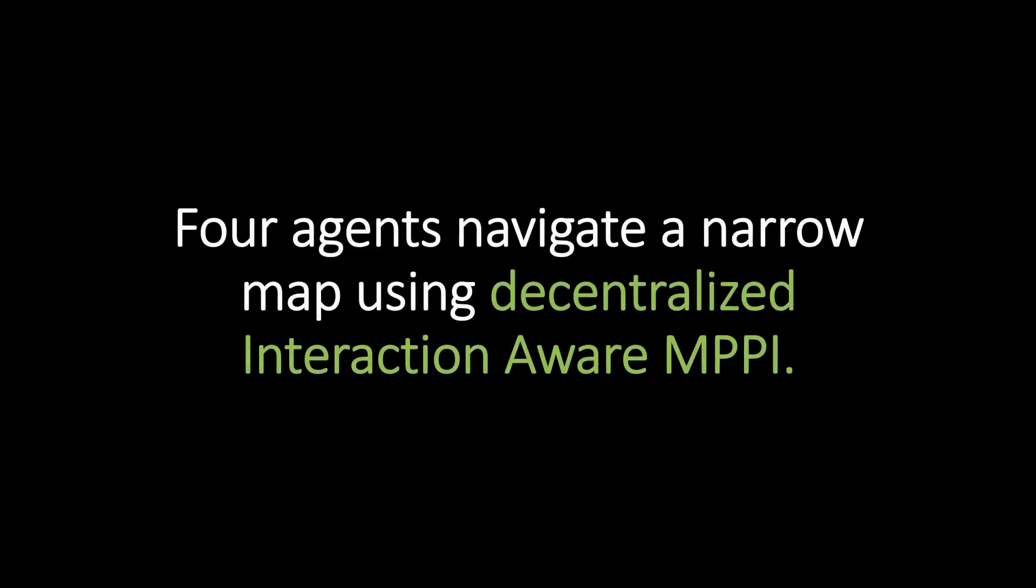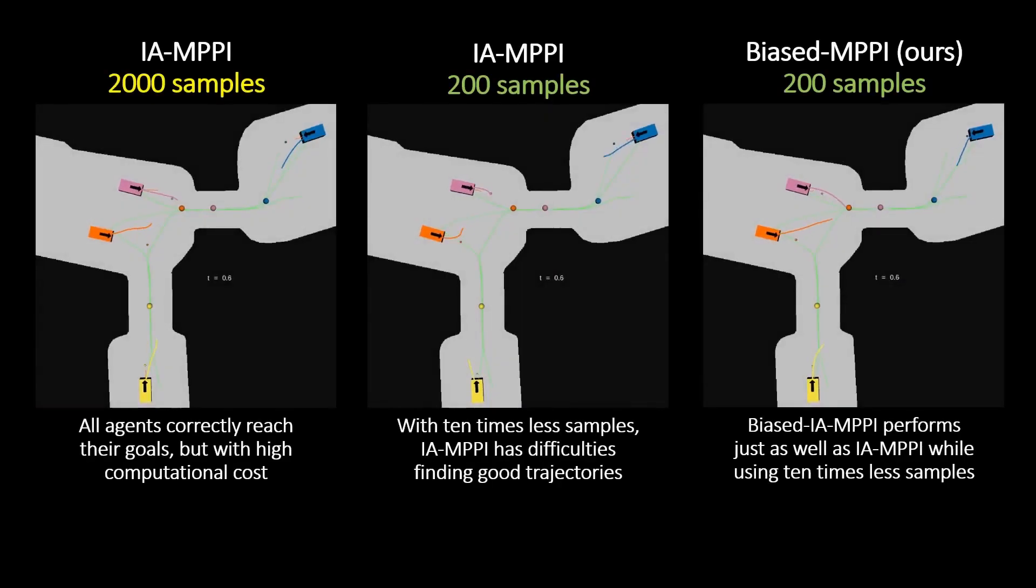In the next experiment, four agents navigate a narrow map using the decentralized interaction-aware MPPI. On the left, with 2,000 samples, interaction-aware MPPI based on the classic sampling scheme crosses an intersection. In the middle, we reduce the number of samples tenfold to reduce the computational burden, resulting in the classical approach failing.